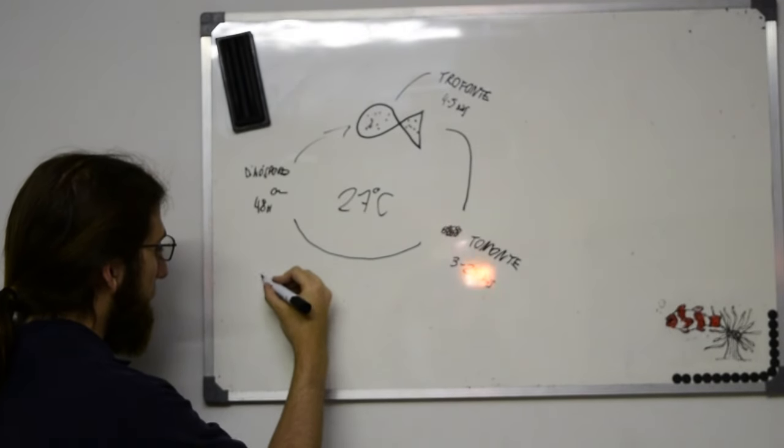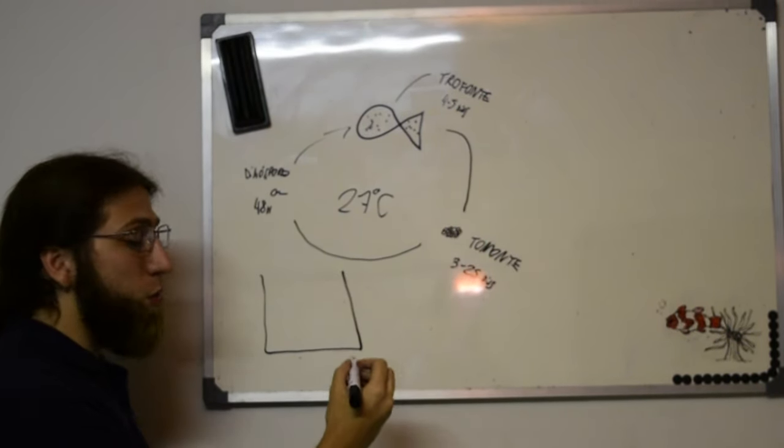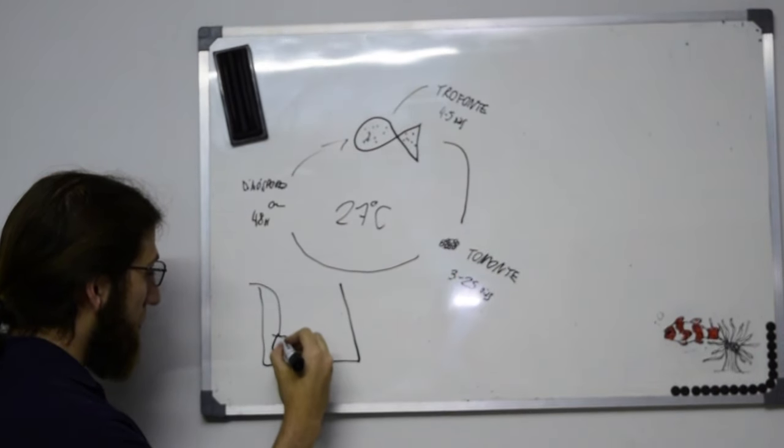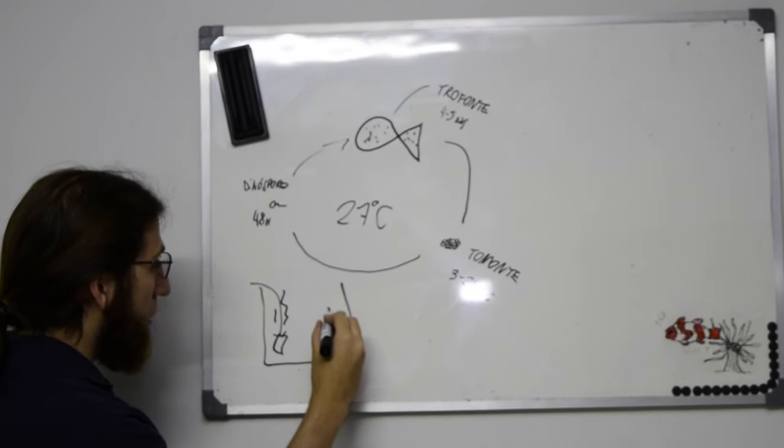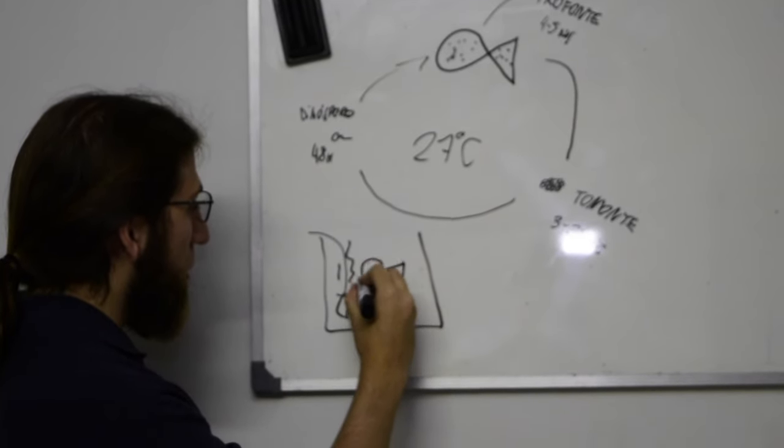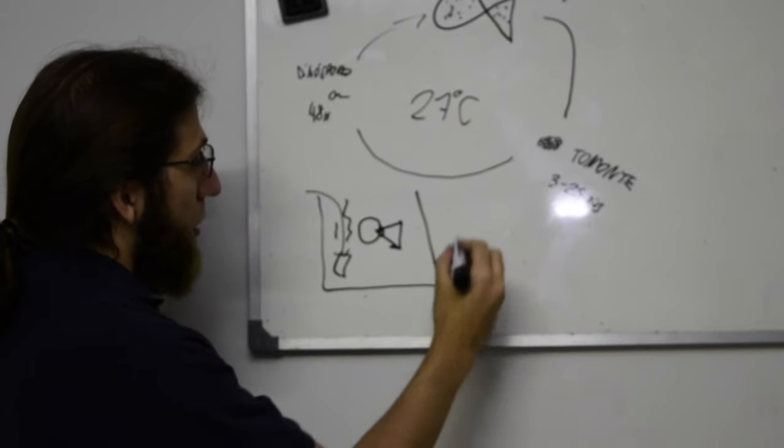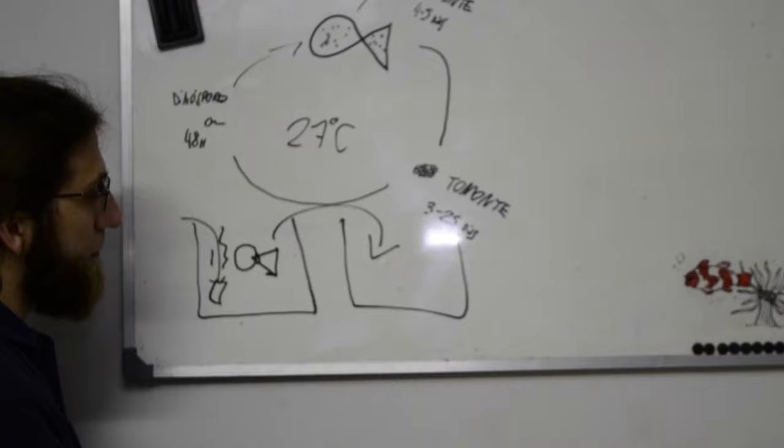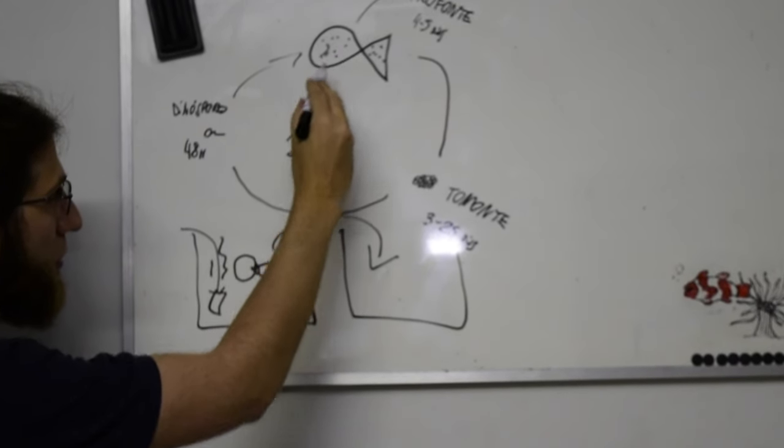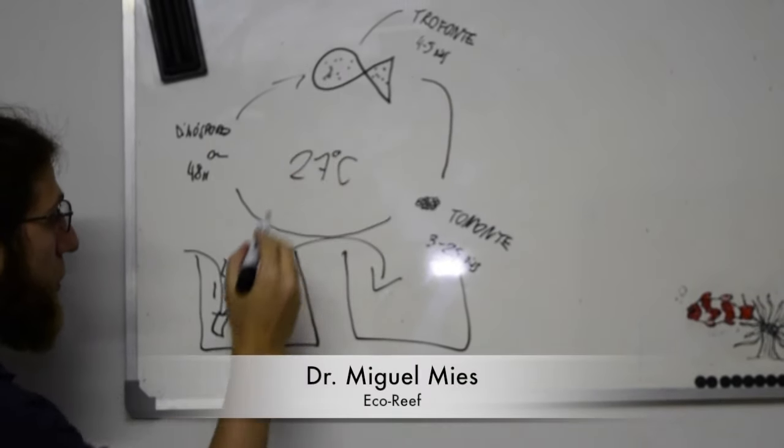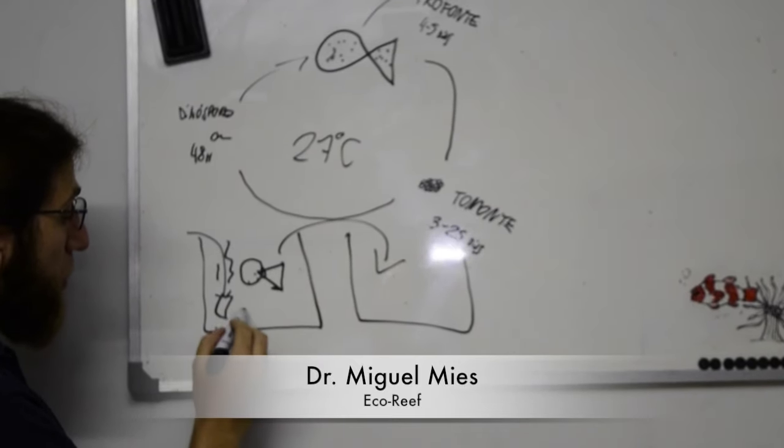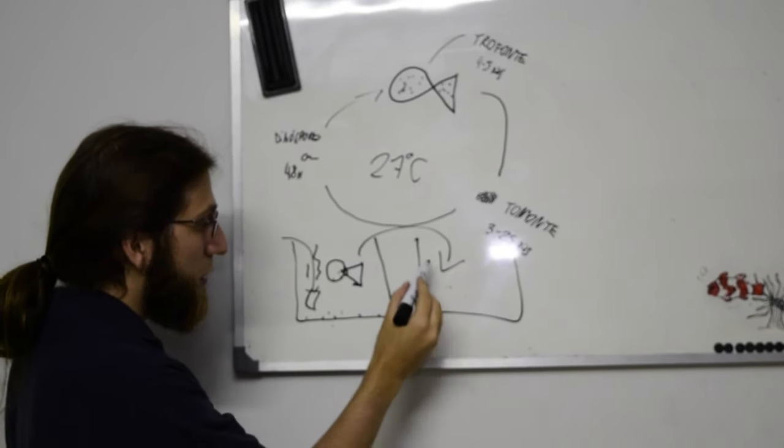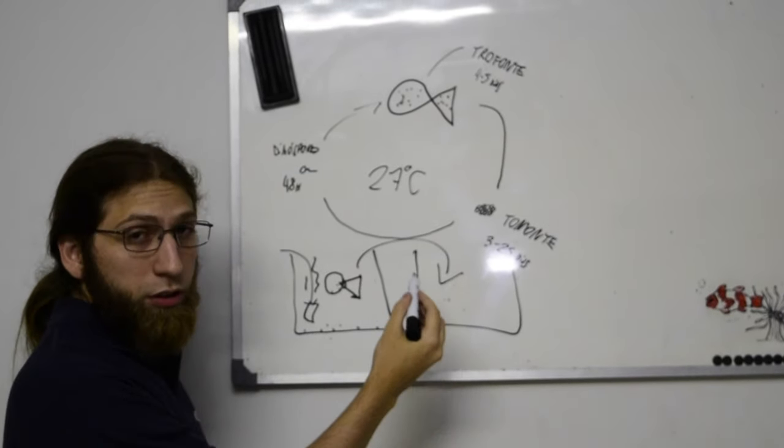Então, é o seguinte, você recebeu o seu peixe, você coloca ele num aquário estático, sem reciclar nada, apenas com uma pedrinha porosa. Você põe o seu peixe aqui, ele está infectado com o odinium. Agora, se depois de dois dias que ele está aqui e você transferir ele para cá, você concorda que todos os cistos que estavam, os cistos não, perdão, os trofomos que estavam nele, caíram, todos não, mas uma boa parte deles vai ter caído no fundo. Se você transferir ele para um tanque novo, estéreo, não vai ter como ele ser reinfectado.